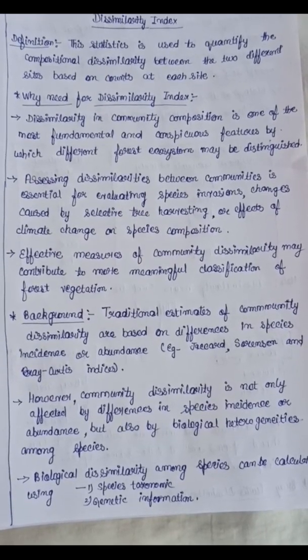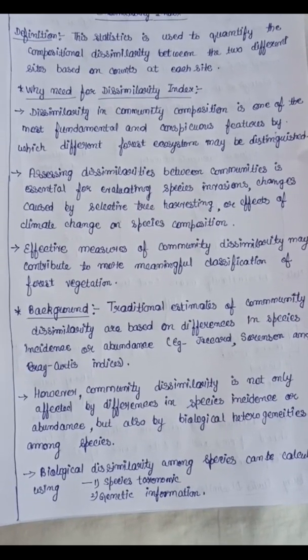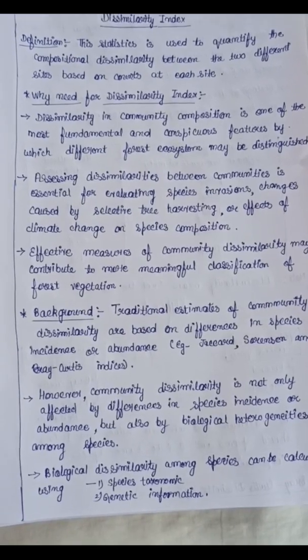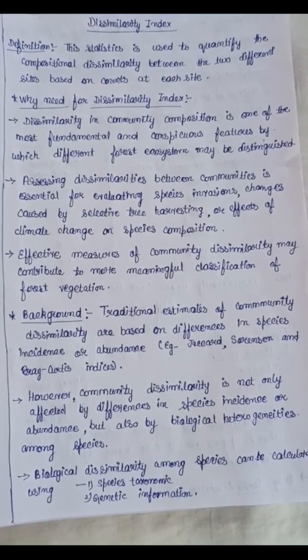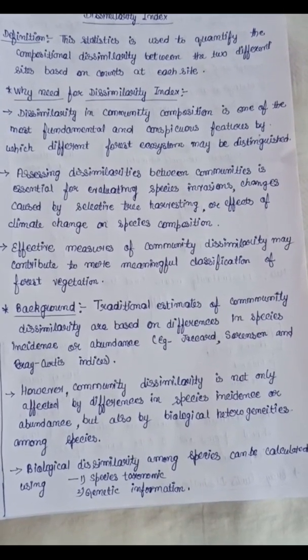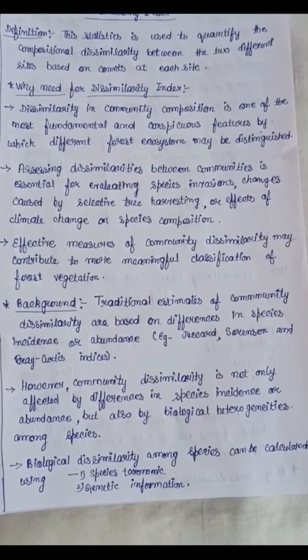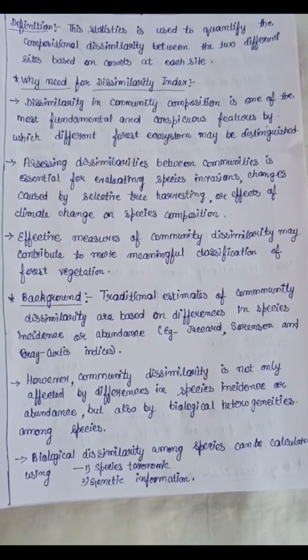It also helps assess the effects of climate change on species composition, whether a particular species has increased or decreased. Effective measures of community dissimilarity may contribute to more meaningful classification of forest vegetation, such as whether to categorize a forest under protected area or not.